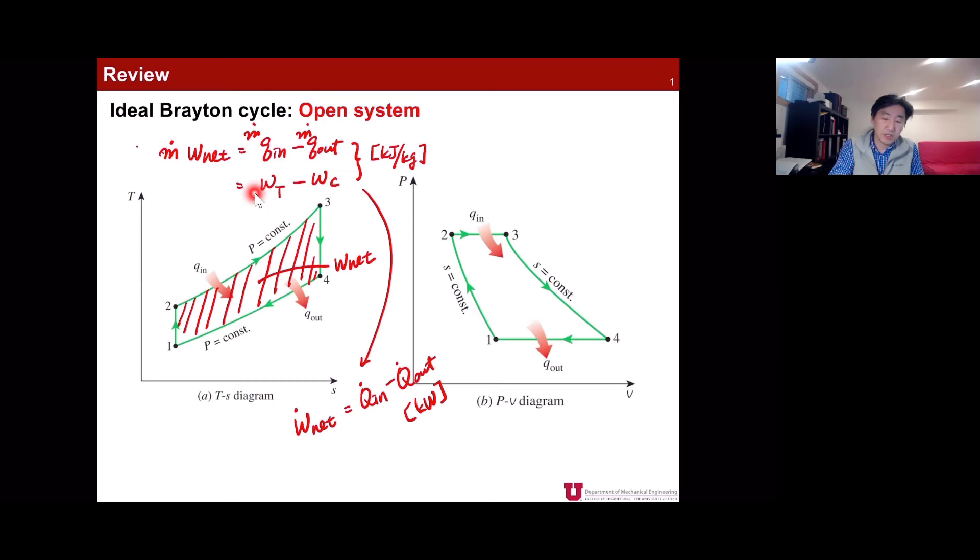That is the first thing we learned about the performance analysis. The second thing we learned about is the thermal efficiency, which is written as this equation. By calculating the net amount of work and the amount of heat input to the cycle, we can calculate the thermal efficiency.